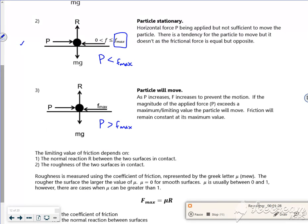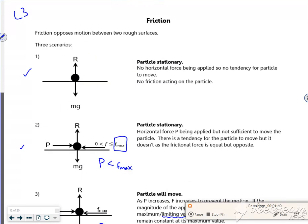So the second one, I push it a little bit but I'm not pushing hard enough for it to break, to start to move. Whereas the third one, I'm pushing loads. Now that breaking point is called the limiting value. The F max is called the limiting value.